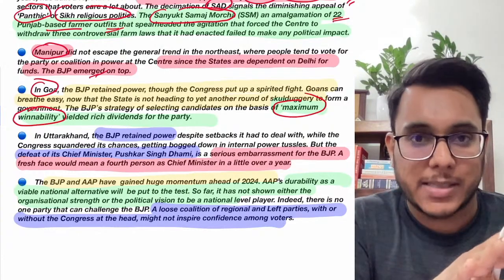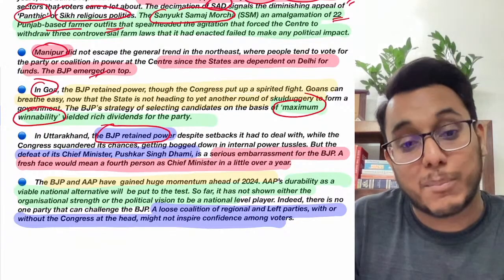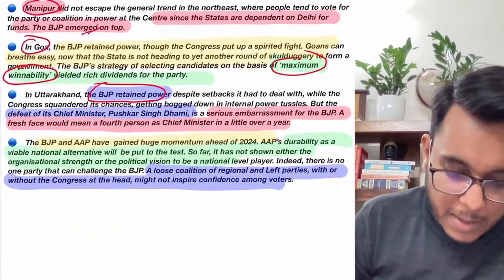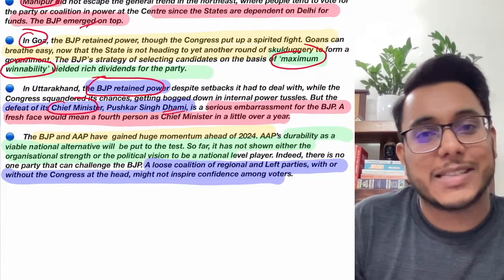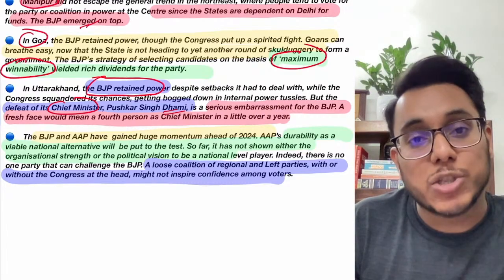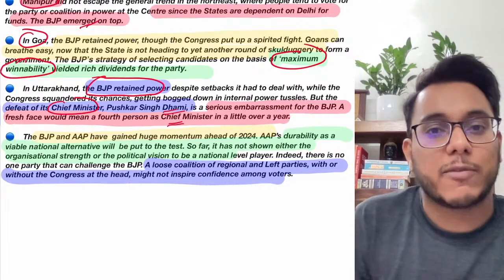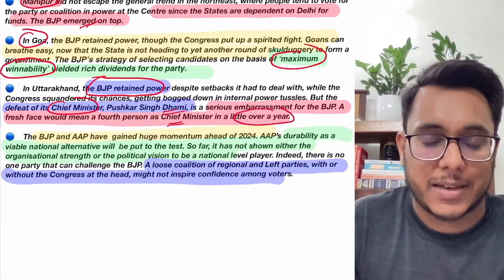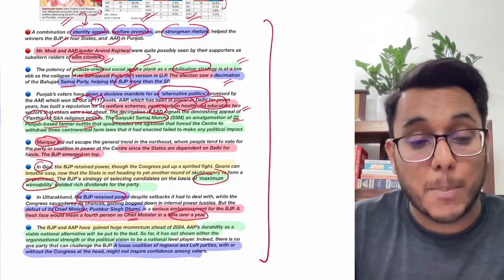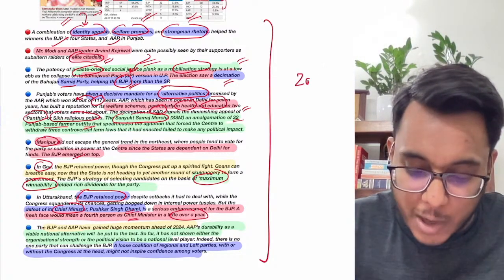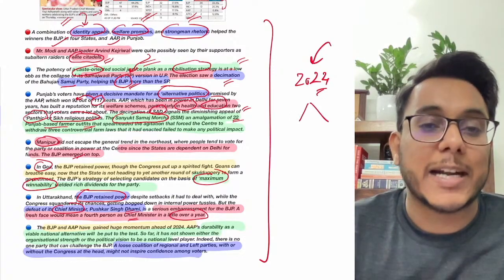In Uttarakhand, BJP retained power, but Chief Minister Pushkar Dhami lost his own seat — a slight embarrassment. A new chief minister will have to be selected, and this will be the fourth Chief Minister of Uttarakhand in just one year. The bigger trend emerging now concerns 2024 parliamentary elections — what are the alternatives to BJP?